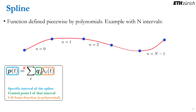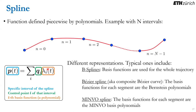Each segment of the spline is expressed as the sum of products of control points q sub i times basis functions, which are polynomials. Depending on how the basis functions are chosen, you get different representations of the same spline. Three common representations are: B-splines, where basis functions cover the whole trajectory; Bezier splines (composite Bezier curves), using Bernstein polynomials per segment; and Minvo splines, using Minvo basis polynomials.